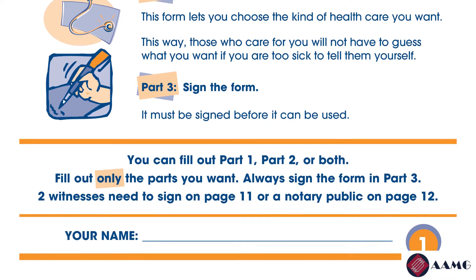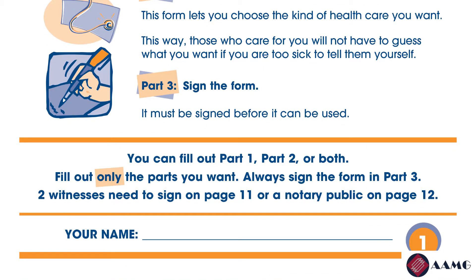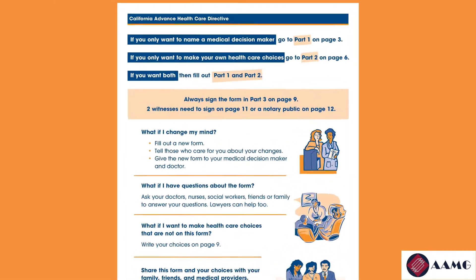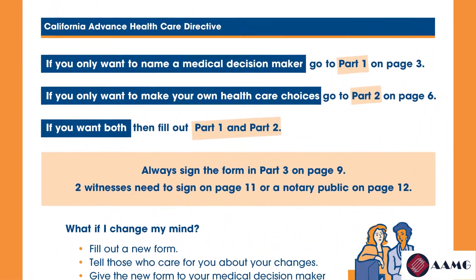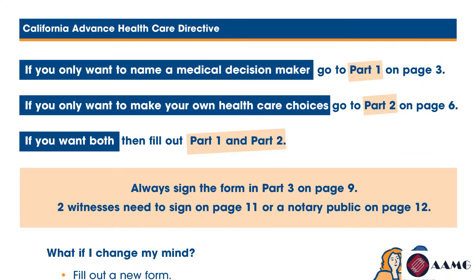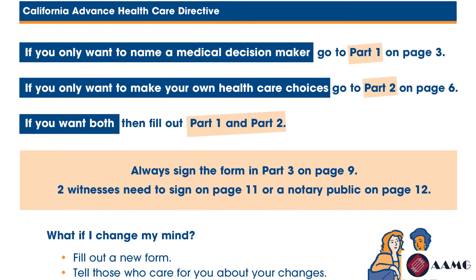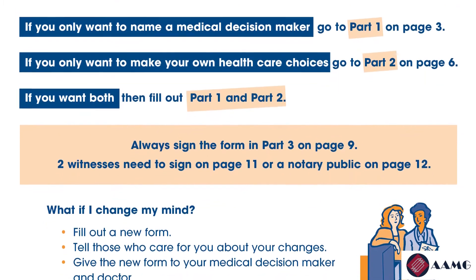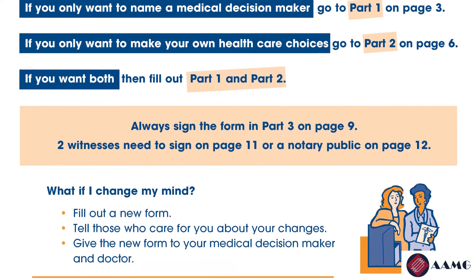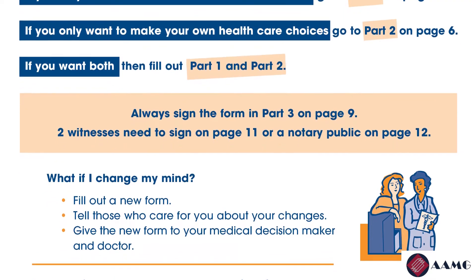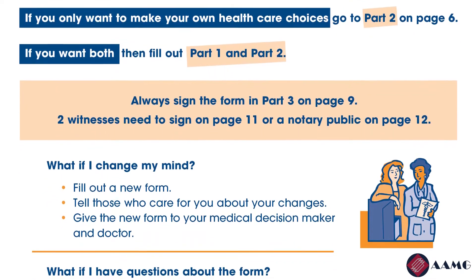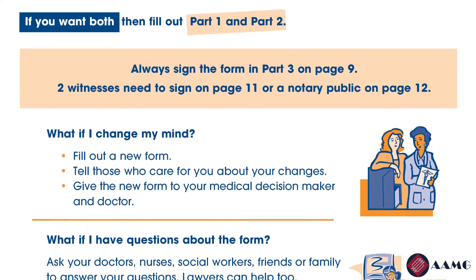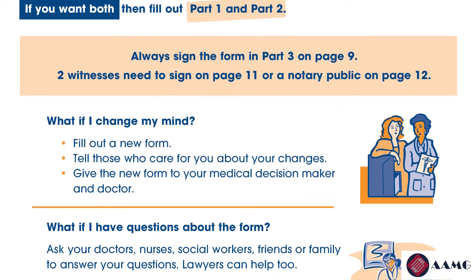Remember, this advanced healthcare directive form is only valid if part three is signed by you. There also needs to be two witnesses who sign the form with you, or a notary public. On the second page: if you only want to name a medical decision maker, go to part one on page three. If you only want to make your own healthcare choices, go to part two on page six. If you want both, fill out part one and part two. Always remember to sign the form in part three on page nine. Two witnesses are required to sign on page 11, or a notary public on page 12.